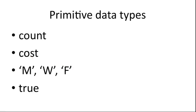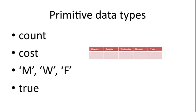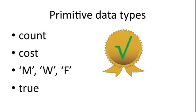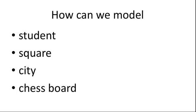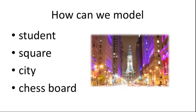We are able to model many things using simple primitive data types. Integers can represent counts. A double, the cost of something. Characters may represent the days of the week. And Boolean values can tell us the state of some condition as true or false. But how could you use these primitive data types to model a student, a shape, a city, or a chessboard?